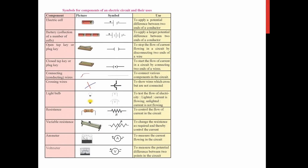Now we move to the next part: symbols and components. This table is very important — you need to understand and learn it. The first component is the electric cell, which applies potential difference across a conductor. A battery is two or more cells connected together and provides more potential difference. An open switch means no current flows; a closed switch allows current to flow. A conducting wire connects different components. Cross wires cross without touching. A light bulb produces light.